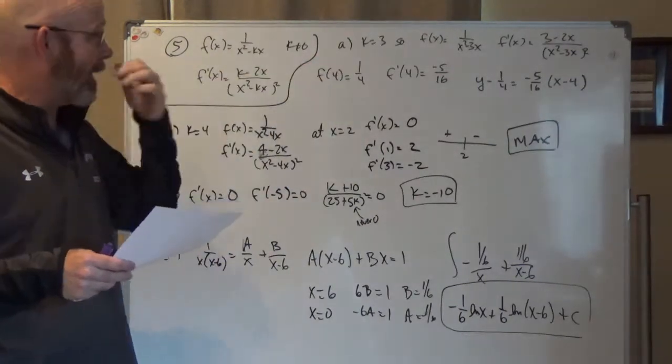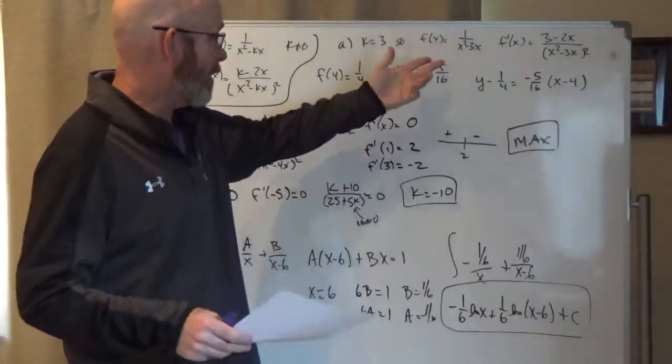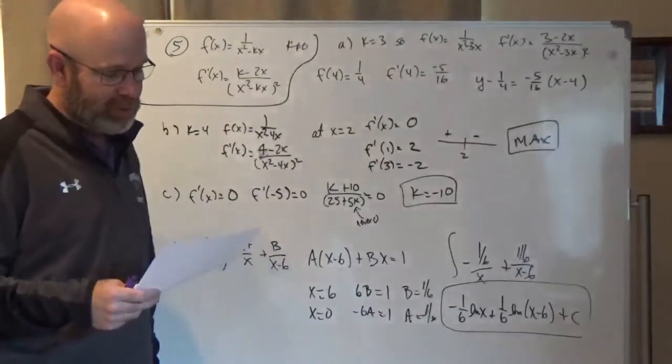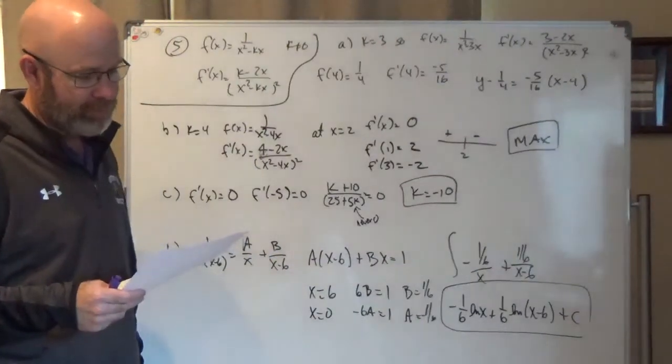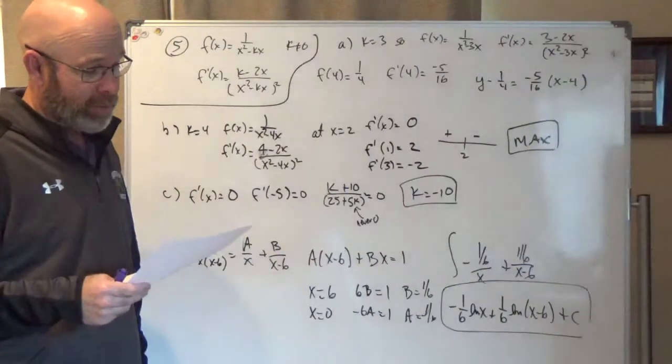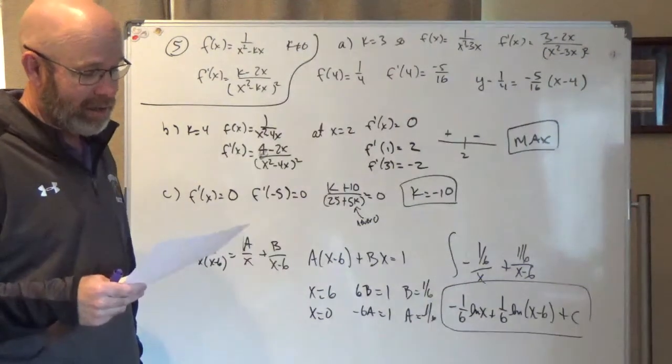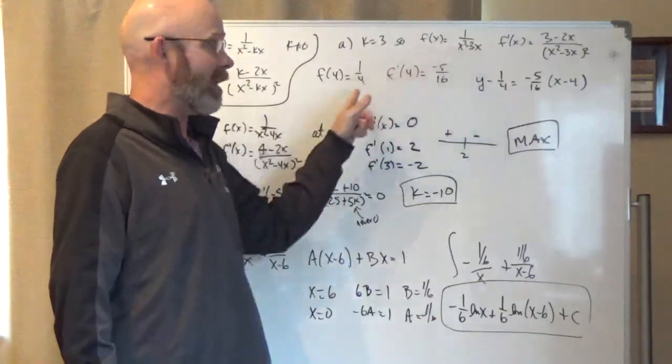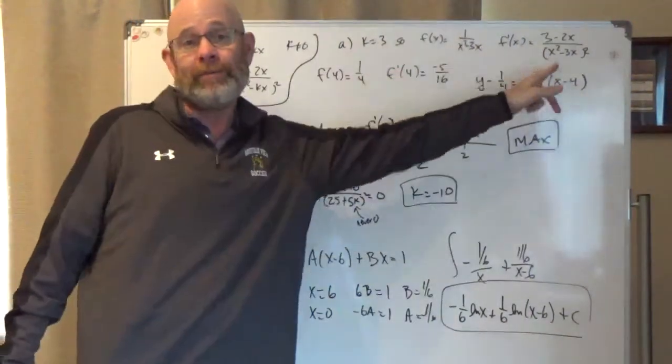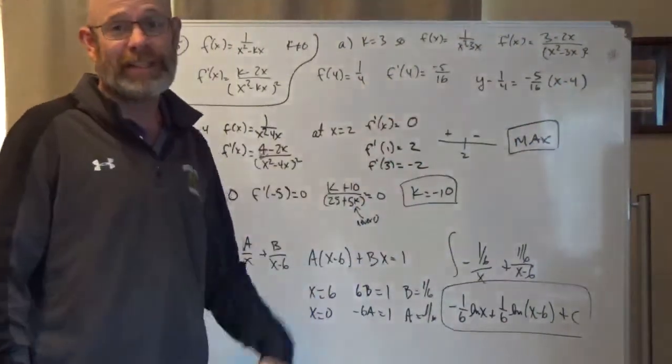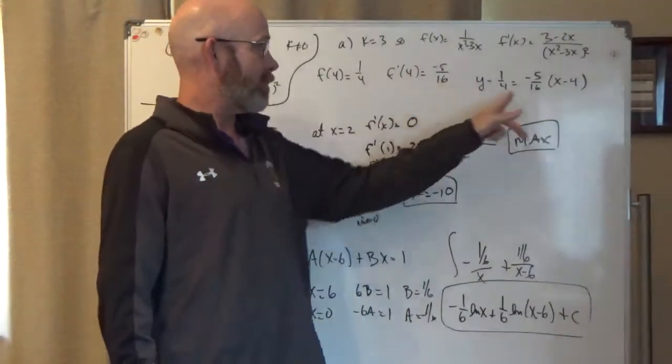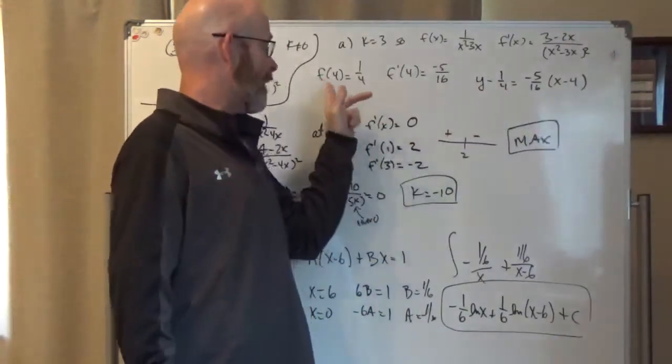The first one says let's have k equals 3. So what I did was I just wrote down f and f' with that 3 in there. And the first question was to write an equation for the tangent line at x equals 4. So first I found the function at 4, plugged it in there, got 1/4. Then I found the derivative at 4, got negative 5/16, and I wrote the equation: y minus 1/4 equals the slope negative 5/16 times x minus 4.